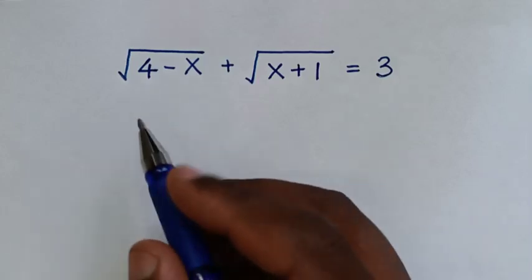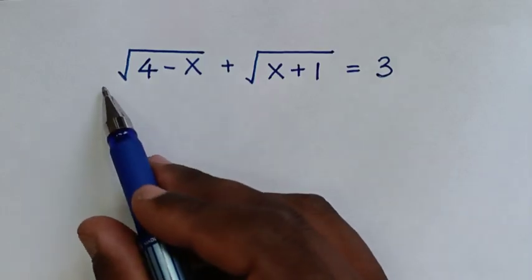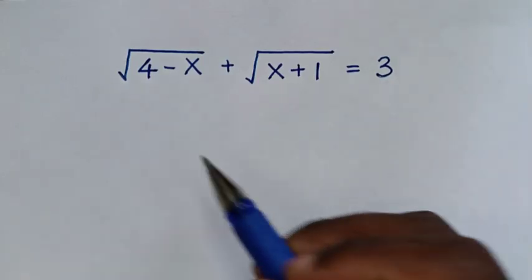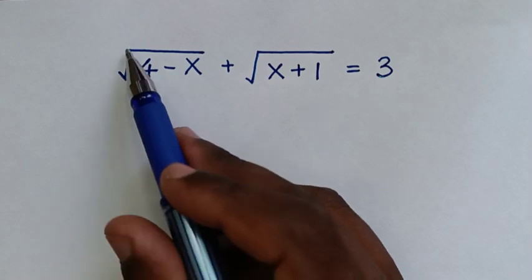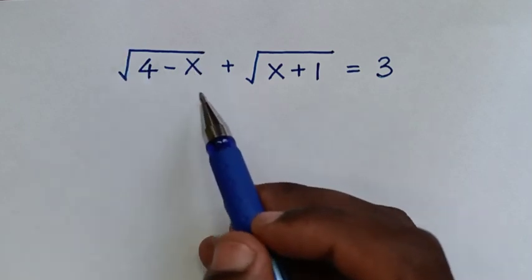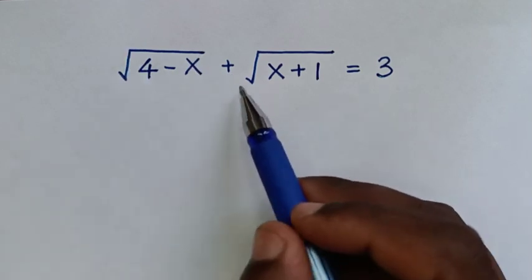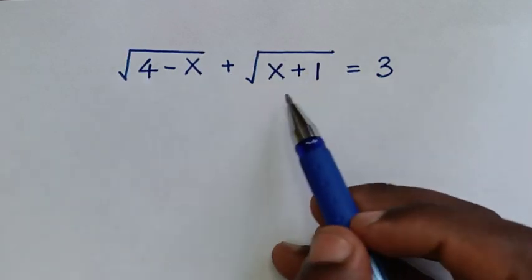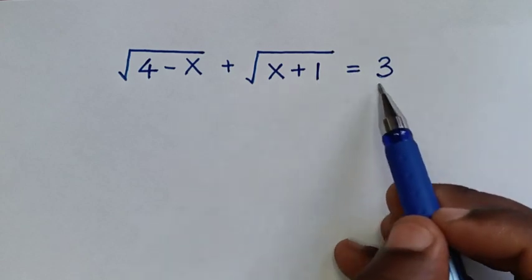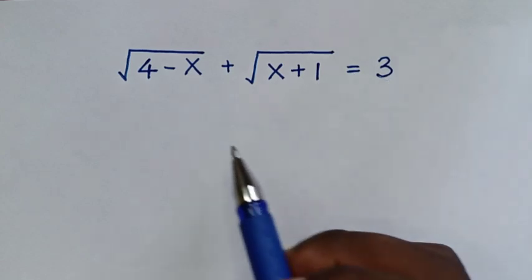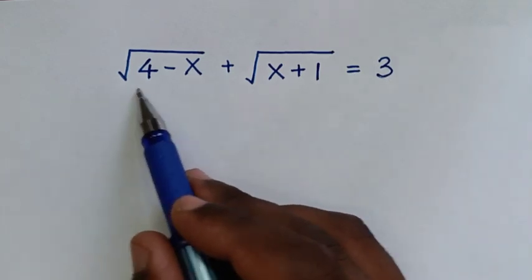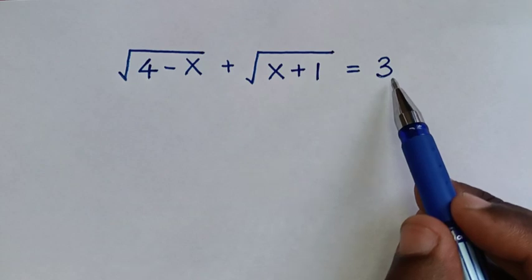Hello, you are welcome to solve this math problem, which is: square root of (4 minus x) plus square root of (x plus 1) is equal to 3. We need to find the values of x from this equation.